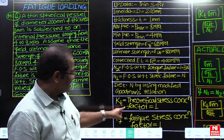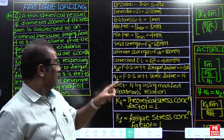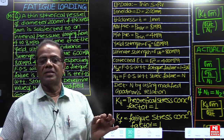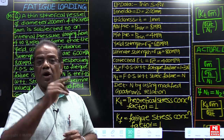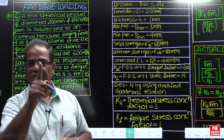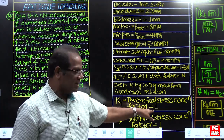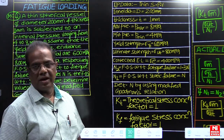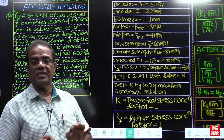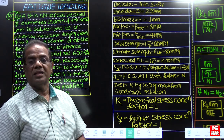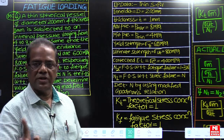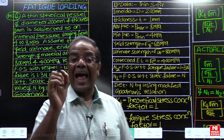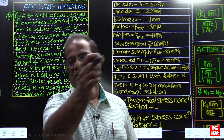K_T is the theoretical stress concentration factor. Since no discontinuities are mentioned in the question, K_T = 1. K_F, the fatigue stress concentration factor, is also 1. In any objective examination, if nothing is mentioned about discontinuities, you assume there are no discontinuities, hence no stress concentration, and both K_T and K_F equal 1.